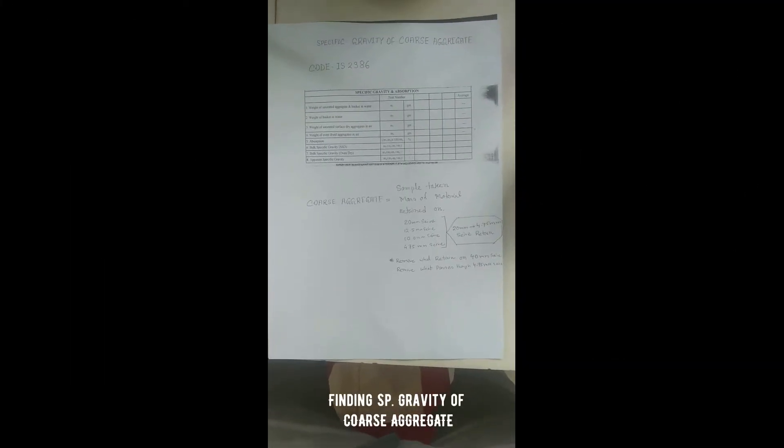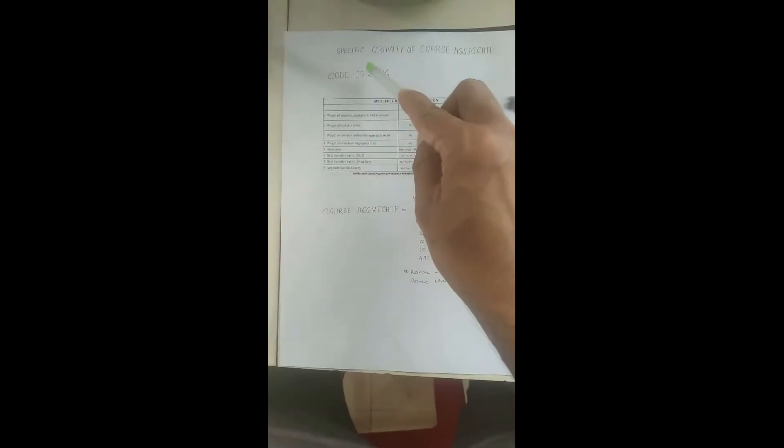Hello everyone, this is Tohit. Today we will show how to determine the specific gravity of coarse aggregate as per Indian Standard. The code number is IS 2386. We will get the specific gravity of coarse aggregate today at the end of our test.